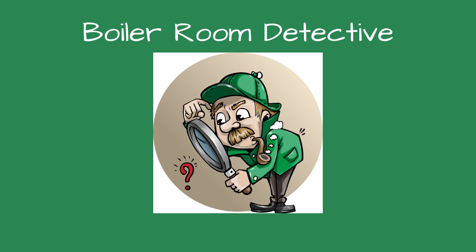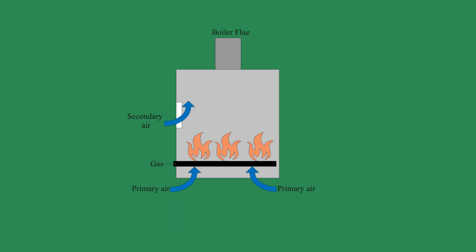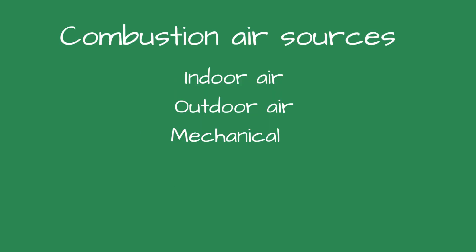Greetings fellow detectives and welcome to Boiler Room Detective. Boiler Combustion Air Using Outside Air. The boiler requires a certain amount of air for combustion, usually 12 to 15 parts of air for every part of gas. There are three ways to introduce this combustion air: indoor air, outside air, and mechanical.